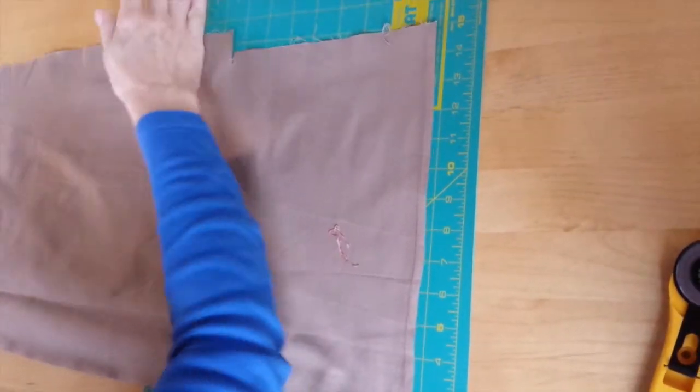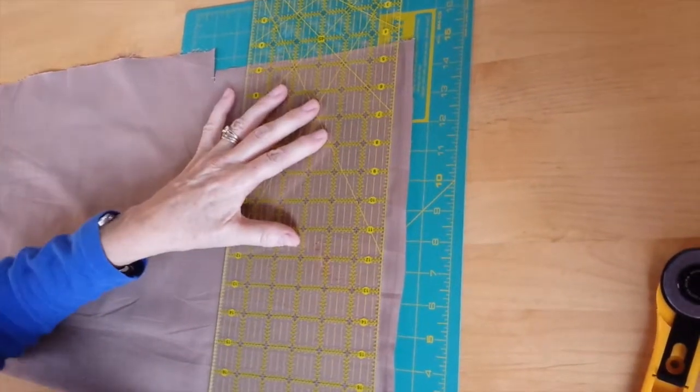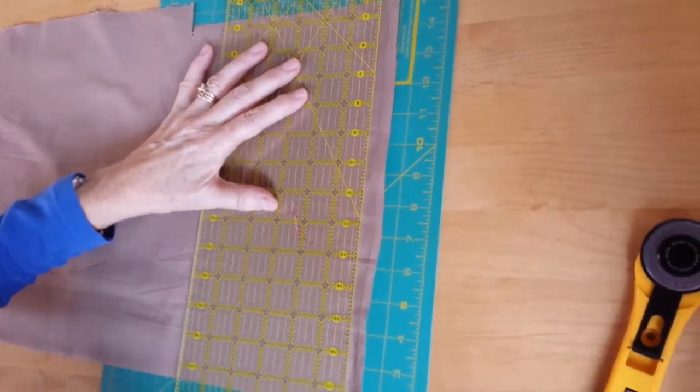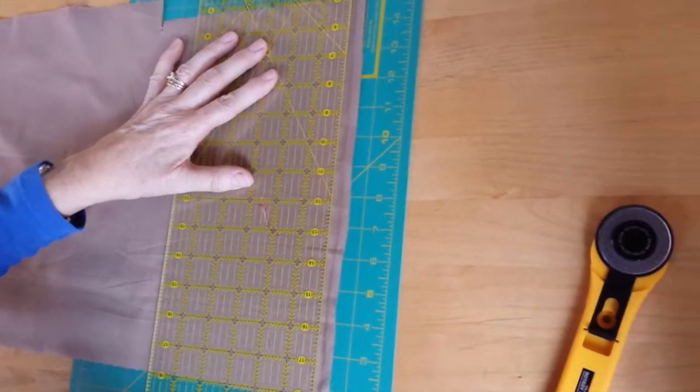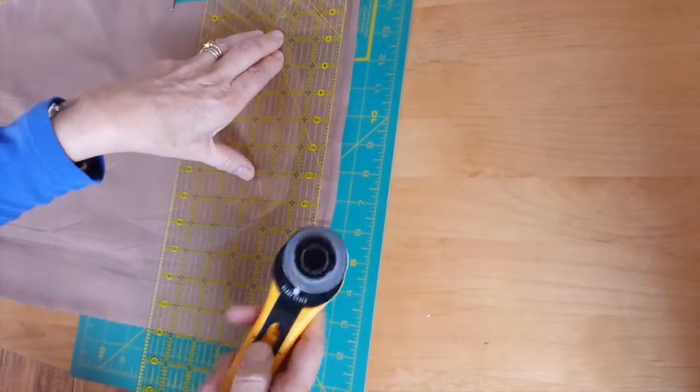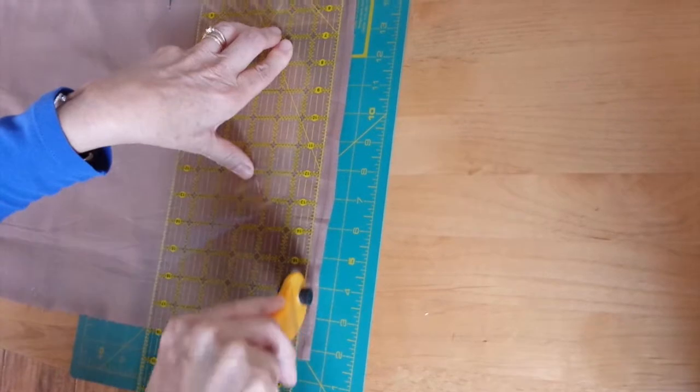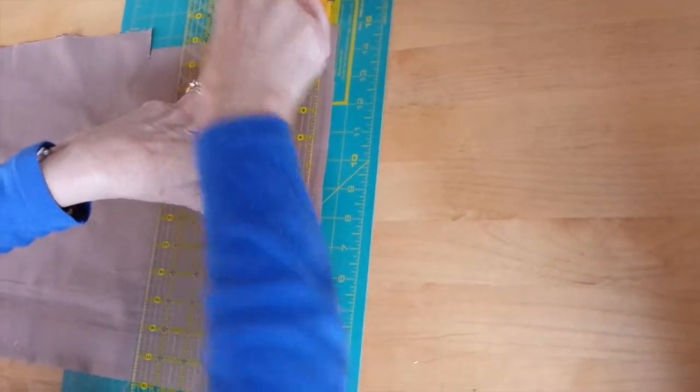You can't include that in your patchwork, it's not flexible enough. So the first job is going to be to set the ruler along the fabric, click the rotary cutter open and cut off the salvage edge.